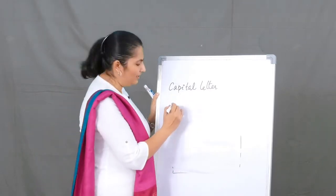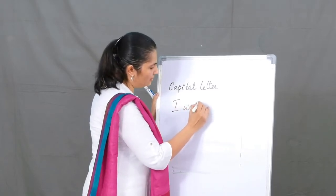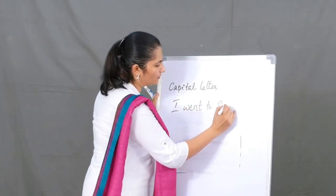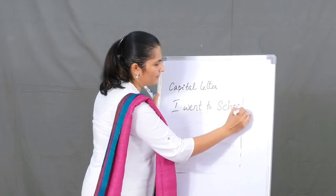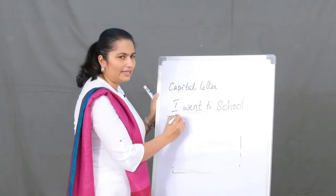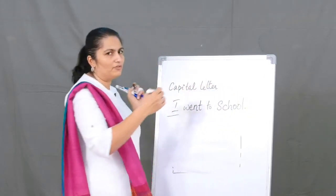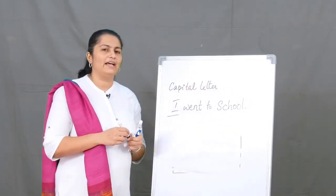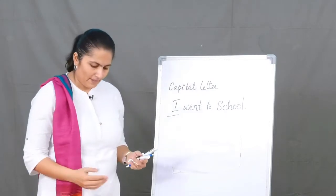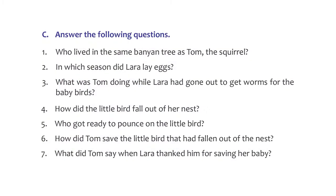At the end of a sentence you will place a full stop. For example: 'I went to school.' This is a sentence — we start with a capital 'I' and end it with a full stop. The full stop is also called a period. You can go ahead, pause the video, and fill in the answers in the notebook.